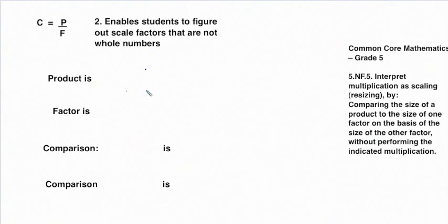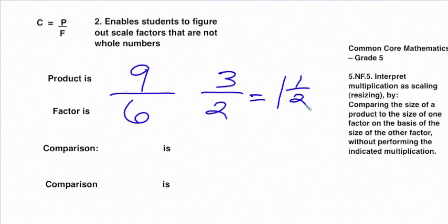So for example, let's say the product is 9, and the factor is 6. Now that is not a whole number comparison. But if we do a little bit of simplification, and consider that the ratio of 9 to 6, that will simplify, we can divide them both by 3, that will simplify to 3 over 2, which, as a mixed number, would be 1 and a half. So then the comparison would be that 9 is 1 and a half times bigger than 6.